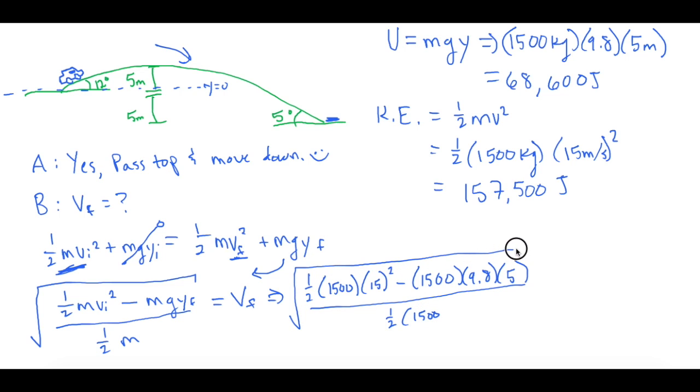And that is all over 1 half of 1,500. And then we take the square root of that answer. So at the top of the hill, at the top, the car is going 11.269 meters per second.